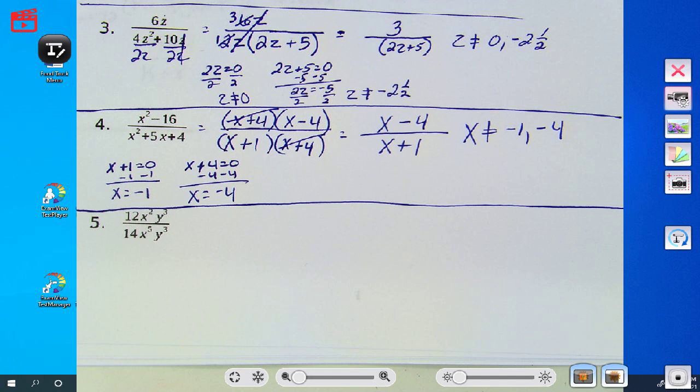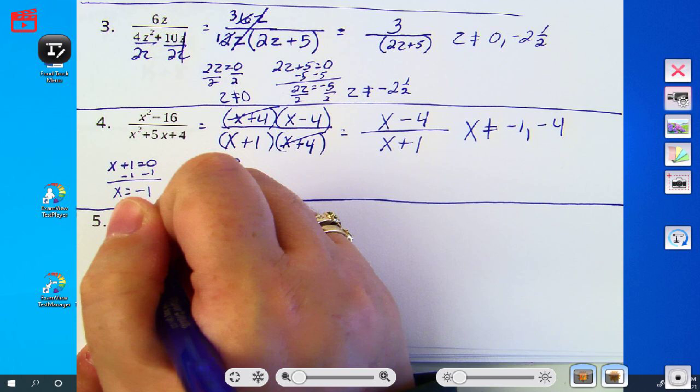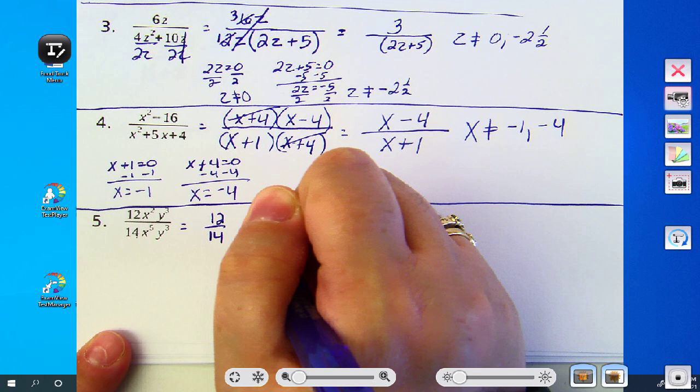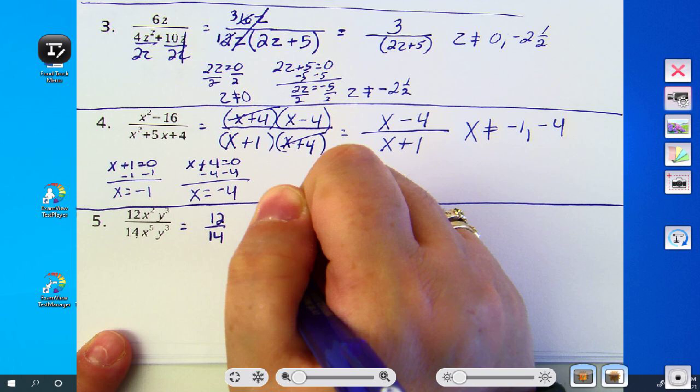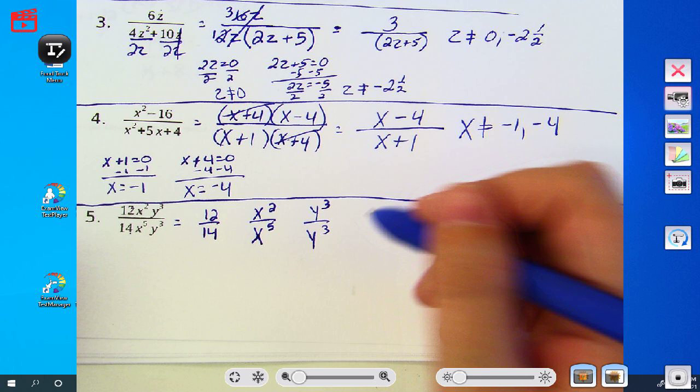Okay. The last one. Remember how we split it up. 12 over 14. Then we did the x's. And then we did the y's. Now your restrictions are easier here. You see x and y and nothing else, right? So it's like x to the fifth equals zero. Well, the only thing that's getting to the fifth power that's getting equal zero.